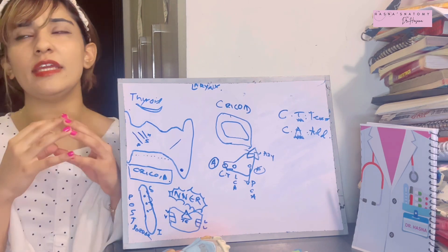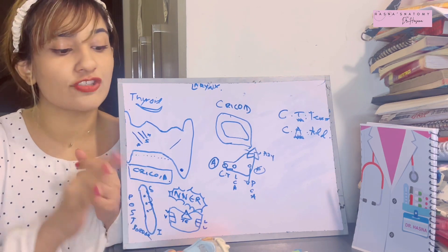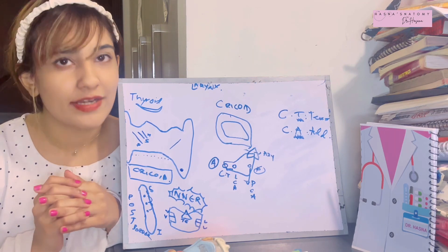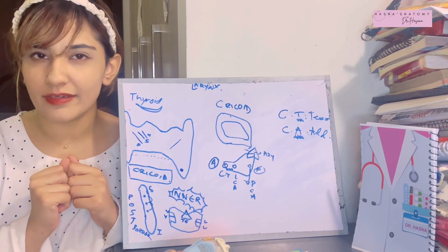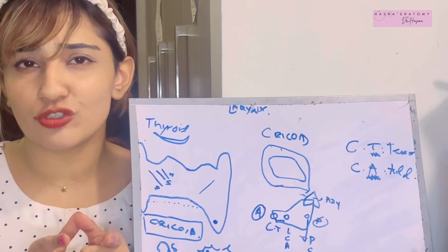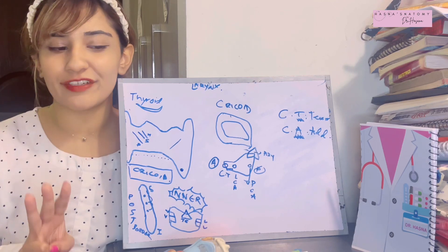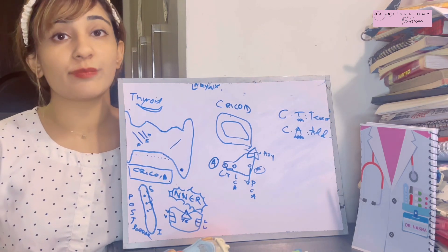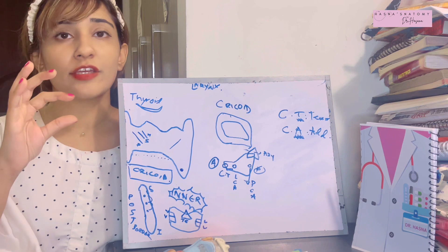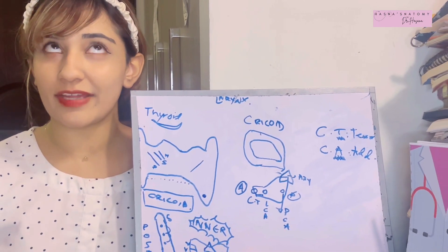The larynx is made up only of cartilages — no bones. To remember these cartilages, think of them as a friend group. There are three unpaired cartilages and three paired cartilages. The unpaired, major ones are the thyroid, cricoid, and epiglottic cartilages. The paired, smaller ones are the arytenoid, corniculate, and cuneiform cartilages.